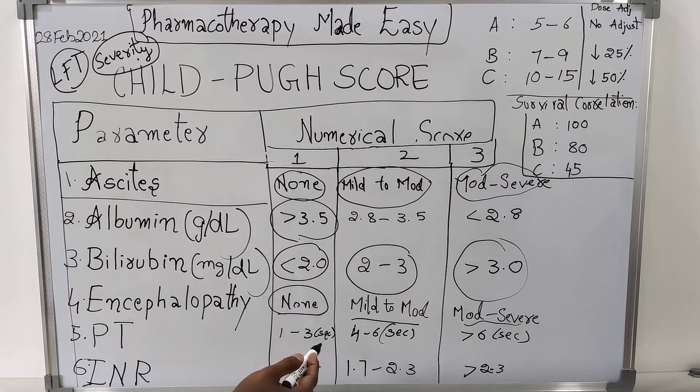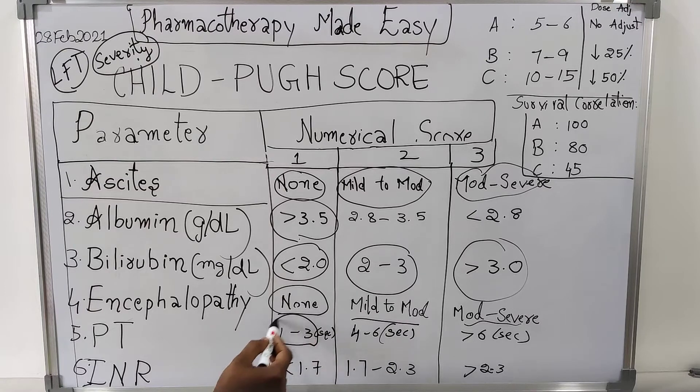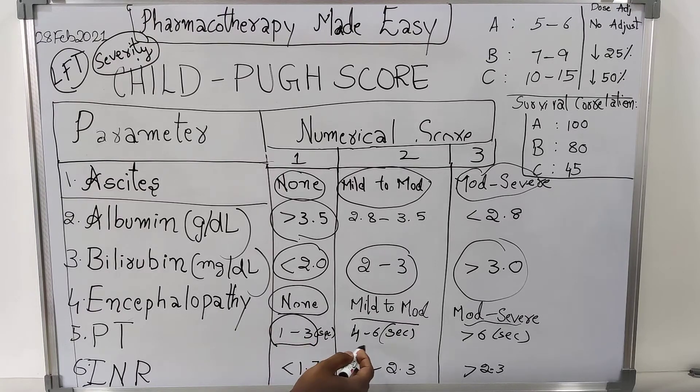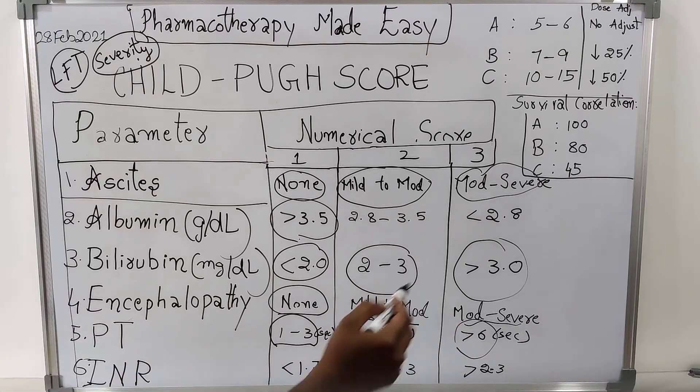And prothrombin time in seconds: if it is 1 to 3 seconds, score will be 1. If it is 4 to 6, score will be 2. If it is greater than 6, score will be 3.